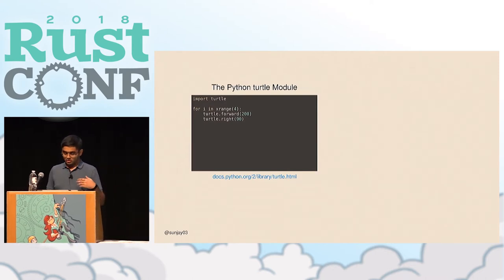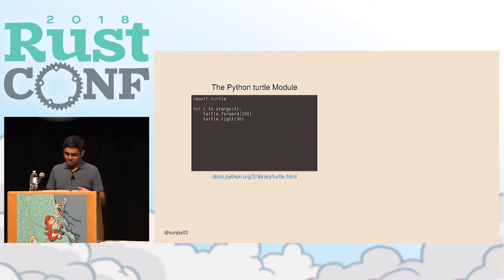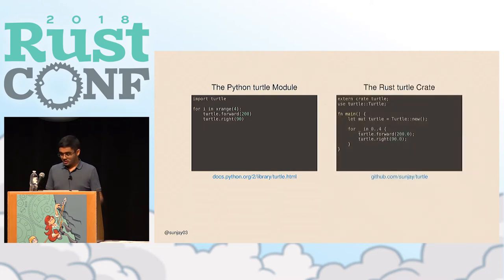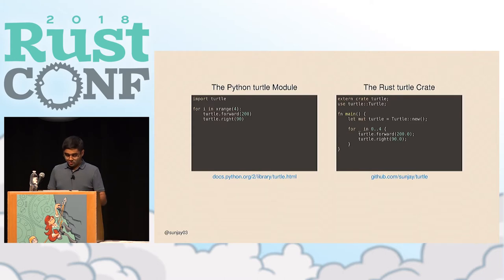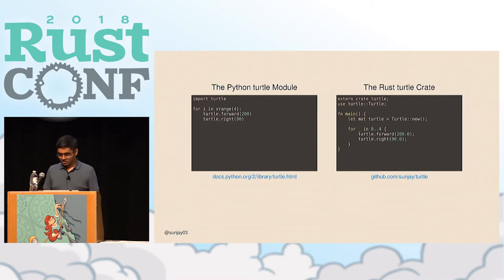In Python, turtle.forward instructs the turtle to walk forward by 200 steps, and turtle.right tells it to turn right 90 degrees. The idea with the Turtle crate is that we can now do the same thing in Rust. Notice how both the Python version and the Rust version look almost identical. It was really important to make sure this was a useful tool for teaching Rust, not just an identical copy of the Python implementation. So the Turtle crate is written in idiomatic Rust and follows Rust best practices.